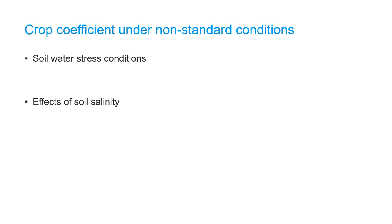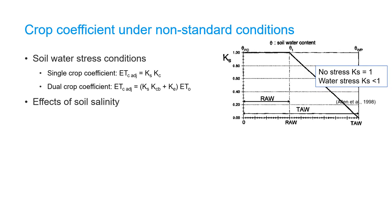Under non-standard conditions, there are some adjustments to the FAO56 crop coefficient. For example, under soil water stress, Kc and KcB are adjusted by multiplying with Ks, the soil water stress coefficient. Ks is a function of soil water content, field capacity, and wilting point. Ks equals 1 when soil water content is between field capacity and the readily available water content. Ks is smaller than 1 when soil water content is lower than the readily available water content, reaching 0 when soil water content is at wilting point.